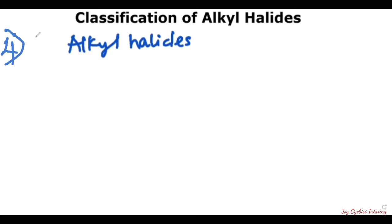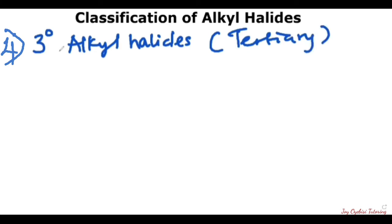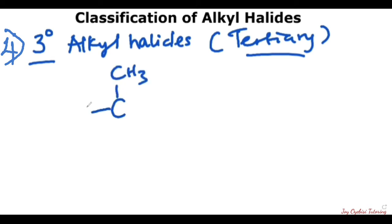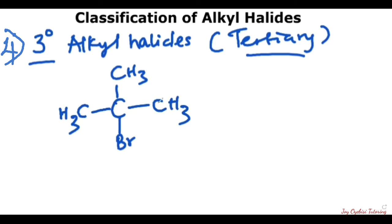The fourth one would be tertiary alkyl halide. This represents tertiary. The carbon bearing the halogen has to be attached to three other carbons to be considered tertiary alkyl halide. So an example of this would be this one here. I'm going to draw out this particular structure. So you can see, very obvious — this is attached to this, and this is attached to these three different carbons. So once you see this, this is tertiary.